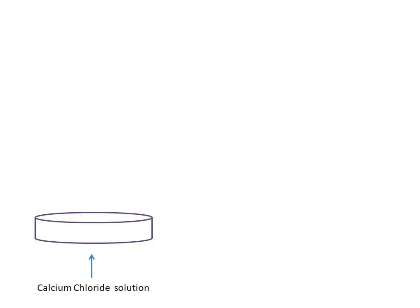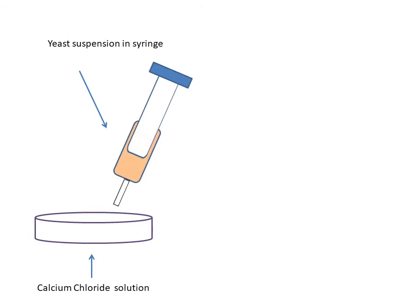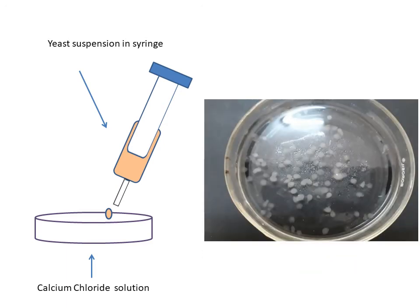We take a petri dish and add 0.5 molar calcium chloride solution to it. The yeast suspension in sodium alginate is taken in the syringe and dropped from a certain height into the petri dish containing calcium chloride solution. When we put the yeast suspension in sodium alginate into the calcium chloride solution, the yeast gets immobilized and you get a globule. If the same solution is put in water, since calcium chloride is not present to form the entrapment, it will dissolve completely and no globules will be seen. This immobilized enzyme is left for 10 minutes, then strained, washed with distilled water, and kept ready for the chemical test.